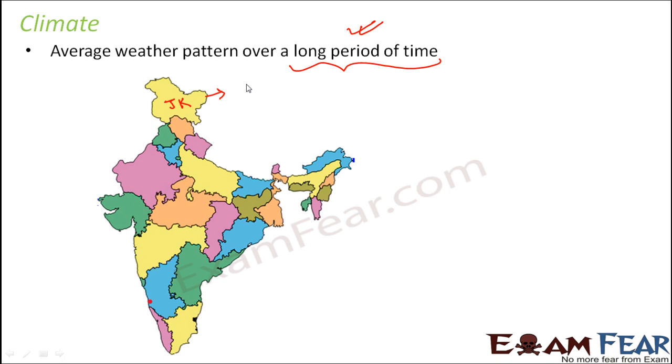Similarly, if you see that generally Rajasthan has a hot and dry climate. The northeast states, somewhere here, so these northeast states, they generally have humid or heavy rainfall.